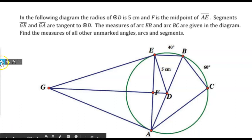I always want to start by marking my given information. I know that the radius of circle D is 5 cm. That tells me anything that goes from D to a point on the circle should be 5. So DA is going to be 5, BD is going to be 5, ED is going to be 5, and right now that's all the segments that I know are 5.